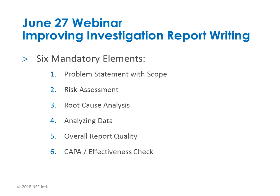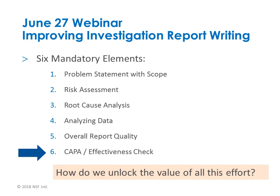First, some context. This is one element of our Investigation Certification Program, and this webinar is the second part in a two-part series. In June, my colleague Andy Barnett completed a webinar entitled 'Improving Investigation Report Writing.' Andy described the six mandatory elements for an Investigation Report, and I will focus on the sixth element, which is the CAPA slash effectiveness check. What I'd like to make clear is that we unlock the value of all our work via the CAPA set that we identify — it's in this last step that we unlock the value.